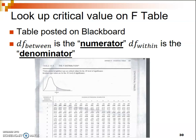The main reason for this is so that you get practice in being able to do this by yourself. I told you in the last video that we're going to use the DF between value that we just calculated on the last step 2 slide. We'll use that as our numerator in looking up our critical value, and then we'll use our DF within as the denominator. On your F distribution, it has you look at the degrees of freedom in the numerator, which tells you which column to look at. The degrees of freedom between is going to be our numerator.